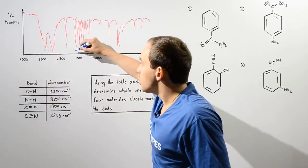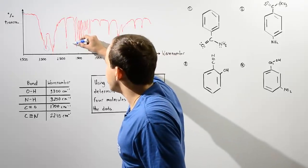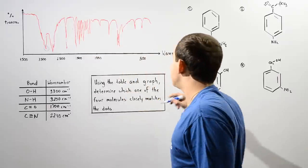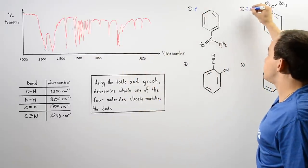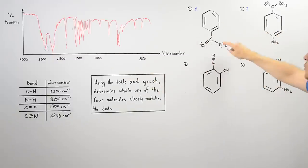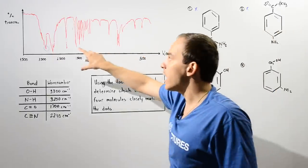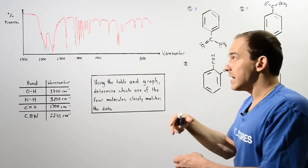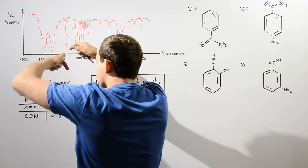At wave number 1700, which is about here on the graph, we see that there is no peak. Because there is no peak at 1700, it cannot be molecule one and it cannot be molecule two, since those molecules have the C=O bond and this graph does not show that dip. When I say peak, I really mean dip because we're going in reverse downward.